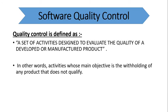Software quality control is defined as a set of activities designed to evaluate the quality of a developed or manufactured product. It is not a planning activity but rather a set of evaluation activities carried out to maintain quality. In other words, quality control involves withholding any product that does not qualify — if any module does not pass in the testing process, it does not proceed to further development until it becomes qualified.